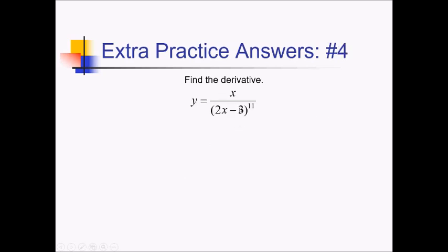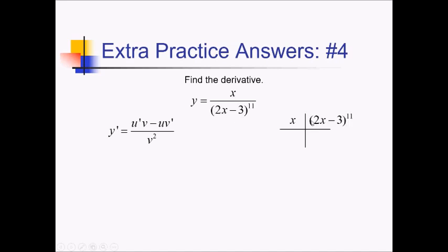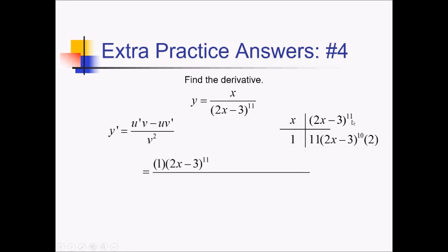On this problem, I want to take the derivative of this expression. For this, I'm going to need the quotient rule: u prime v minus uv prime over v squared. For my box and ribbon, I've got my numerator of x and my denominator of 2x minus 3 to the 11th. Derivatives of these are going to be 1, and this is going to be 11 times 2x minus 3 to the 10th, times the derivative of 2x minus 3, using the chain rule — so that's a 2. Multiplying it out, I have 1 times 2x minus 3 to the 11th, minus x times the stuff down here, all over 2x minus 3 to the 11th squared. And I'm going to call this done.